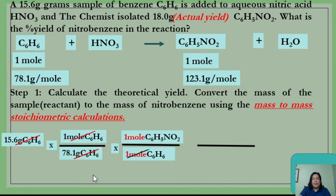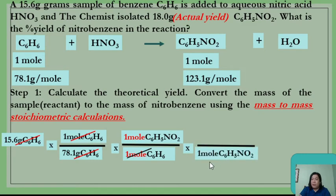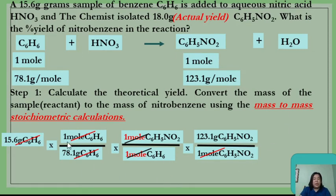Cancel the mole unit and you are left with 1 mole of nitrobenzene. Now for the last step of the dimensional analysis: use the molar mass of nitrobenzene. Since molar mass always pairs with 1 mole, place 123.1 grams of nitrobenzene in the numerator to cancel the mole unit. Now we have reached our end unit, which is mass. Perform the operation in your dimensional analysis.